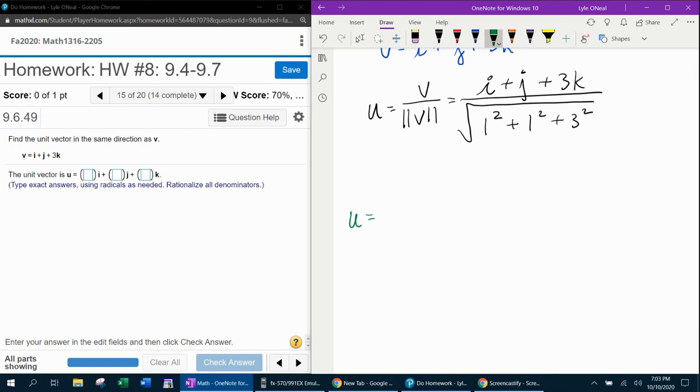All right, so here we go. This vector is going to be, notice the coefficient of i is 1. So that's going to be 1 over the square root of 9, 10, 11. That simplifies to the square root of 11. And that is my i coefficient, that is the value of A for the unit vector.